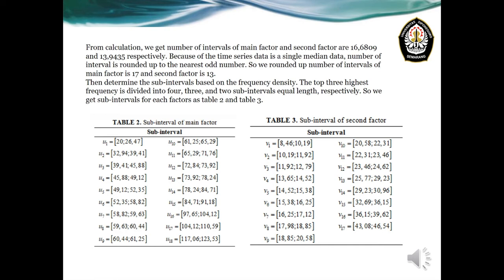Because the time series data is single median data, the number of intervals is rounded up to the nearest odd number. So we round up: the number of intervals for the main factor is 17, and for the second factor is 13. After obtaining the intervals, we also determine subintervals based on frequency density. The top three highest frequency density intervals are divided into four, three, and two subintervals of equal length respectively. This gives us subintervals for each factor as shown in Tables 2 and 3: Table 2 shows 18 subintervals for the main factor, and Table 3 shows 17 subintervals for the second factor.